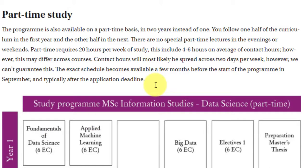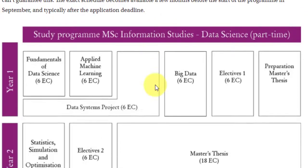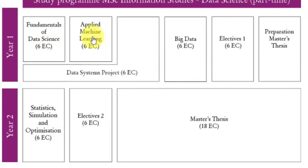For part-time study, the course content is exactly the same but instead of completing it in one year, you complete it in two years. In year one semester one, you study two core courses and do the minor project. Then Big Data, one elective, and a preparation for the master's thesis in semester two. In year two, you study two subjects and then complete the master's thesis.